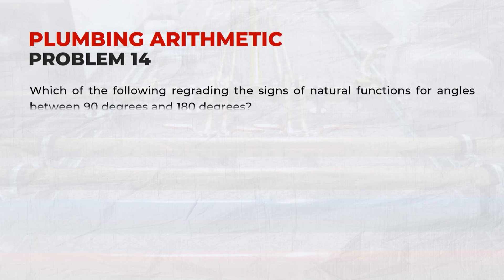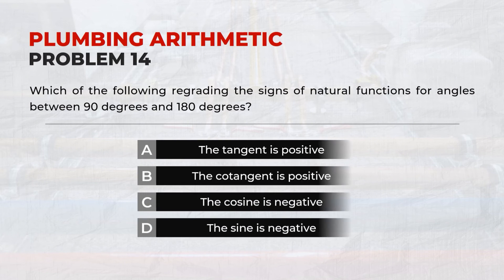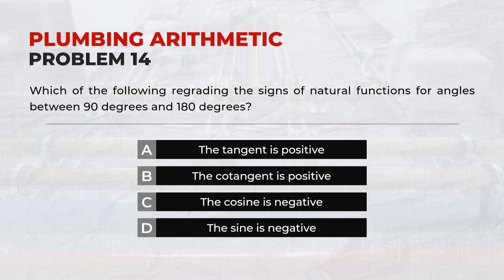Which of the following regarding the signs of natural functions for angles between 90 degrees and 180 degrees? Answer: C. The cosine is negative.